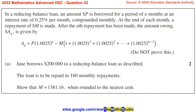Question 32. In a reducing balance loan, an amount P dollars is borrowed for a period of N months at an interest rate of 0.25% per month compounded monthly. At the end of each month, a repayment of M dollars is made.